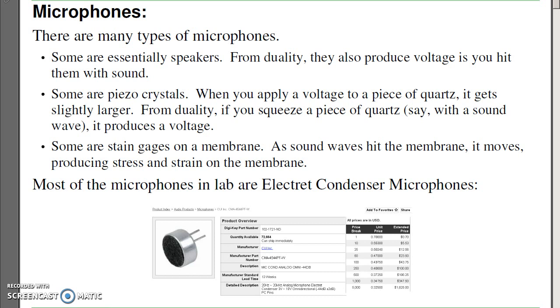Others use strain gauges and membranes. As sound waves hit the membrane, it moves, which produces stress and strain. The strain gauges will then measure the strain. Most of the microphones that we have in the ECU building are electret condenser microphones, like the ones you see there. These are essentially variable resistors.